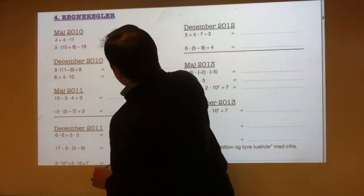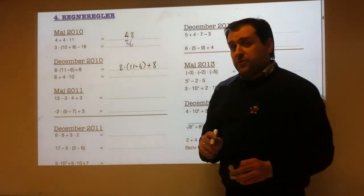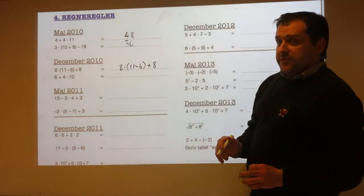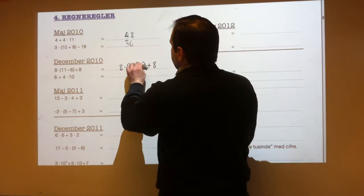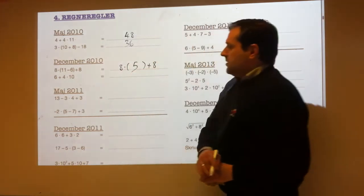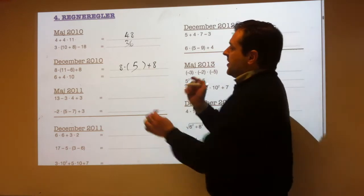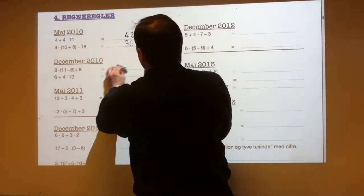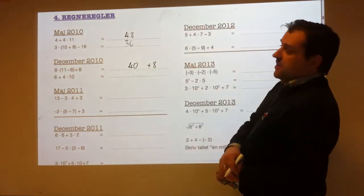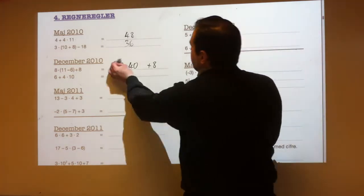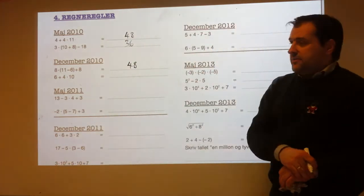8 times (11 minus 6) plus 8. Do the brackets first: 11 minus 6 is 5. Do the multiplication next: 8 times 5 is 40. And then 40 plus 8 is 48.